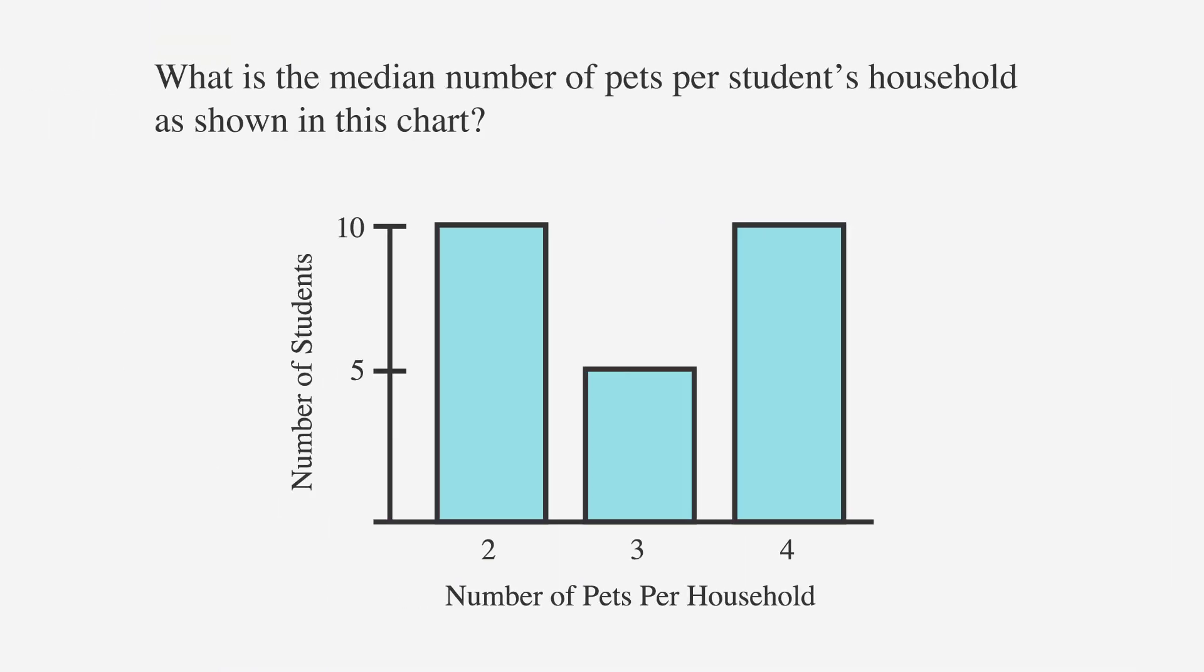So since we have 10 students who have 2 pets and 10 students who have 4 pets, those make 10 pairs. Cross them all out. We're left with our median. All the rest of the students have 3 pets, so the median value is 3 pets per household.